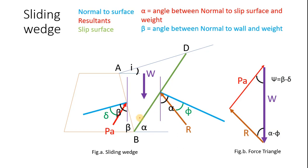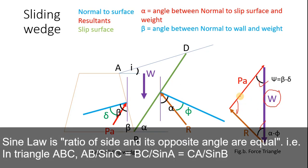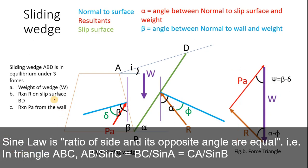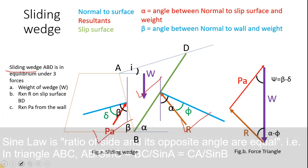So by drawing this and shifting the forces parallel and finding the angles, we create a force triangle. Here we know the magnitude of weight and we know these three angles. Now using the sine law, we can find the force PA and reaction R. ABD is our sliding wedge which is in equilibrium due to weight, reaction, and PA.